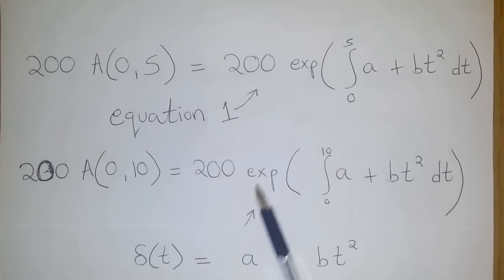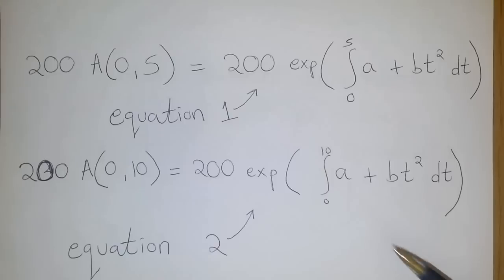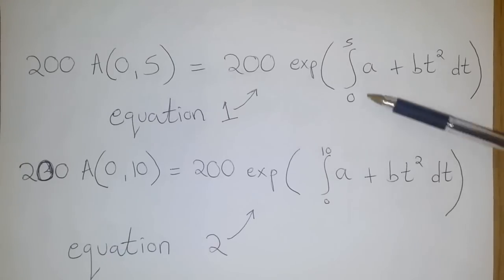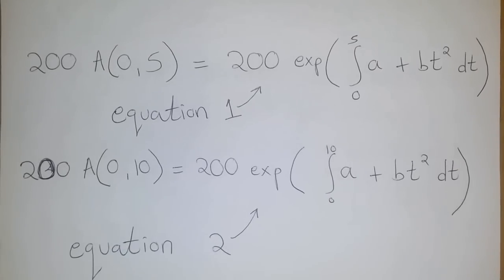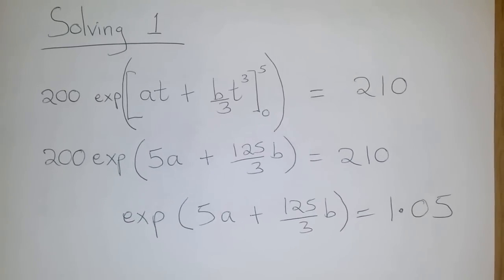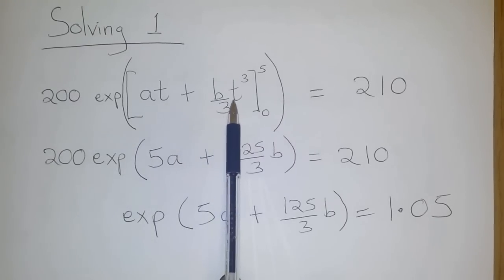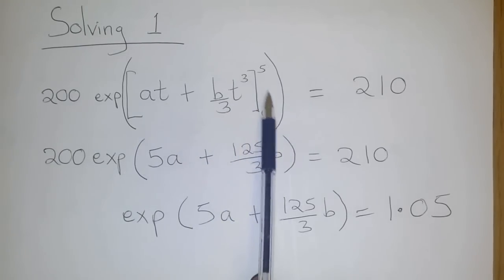If you multiply that by 200, you end up with the accumulated value. So, calling this equation 2 and this other one equation 1, when we simplify equation 1 by solving the integral, we end up with the integral as a t plus b over 3 t cubed with the limit as 0 to 5.